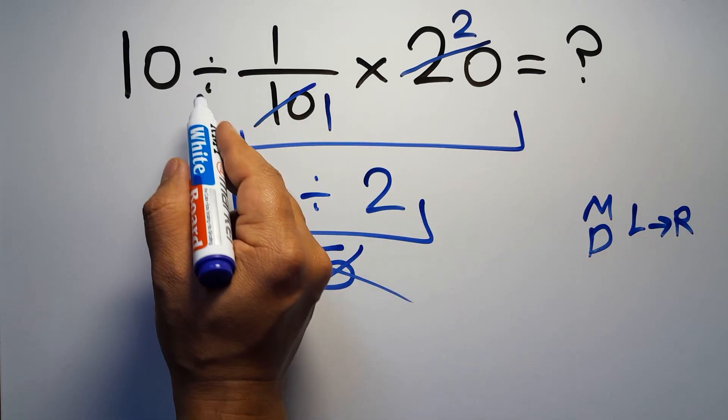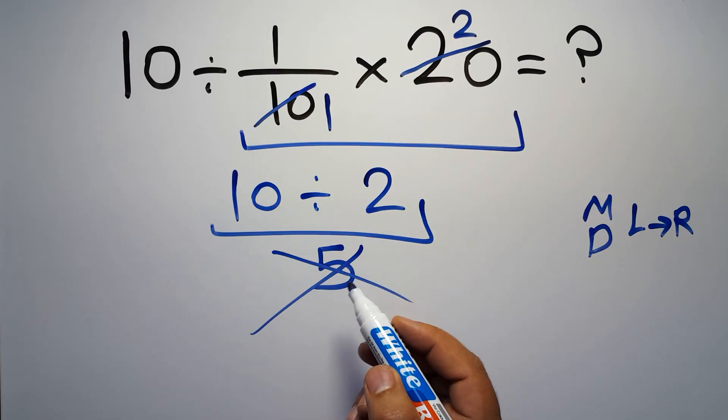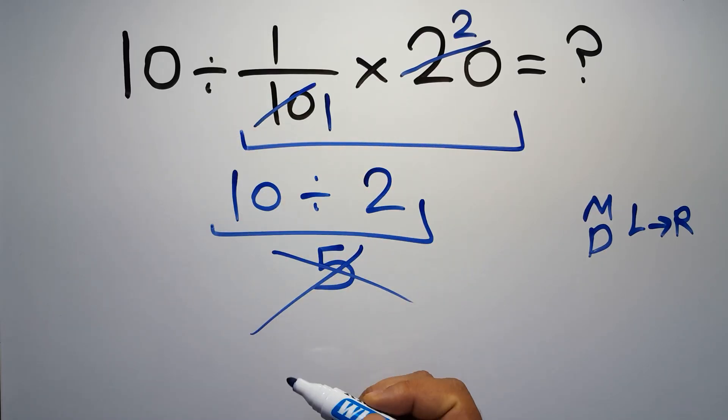So here, first we have to do this division, then this multiplication. If we do this multiplication before this division, it is wrong.